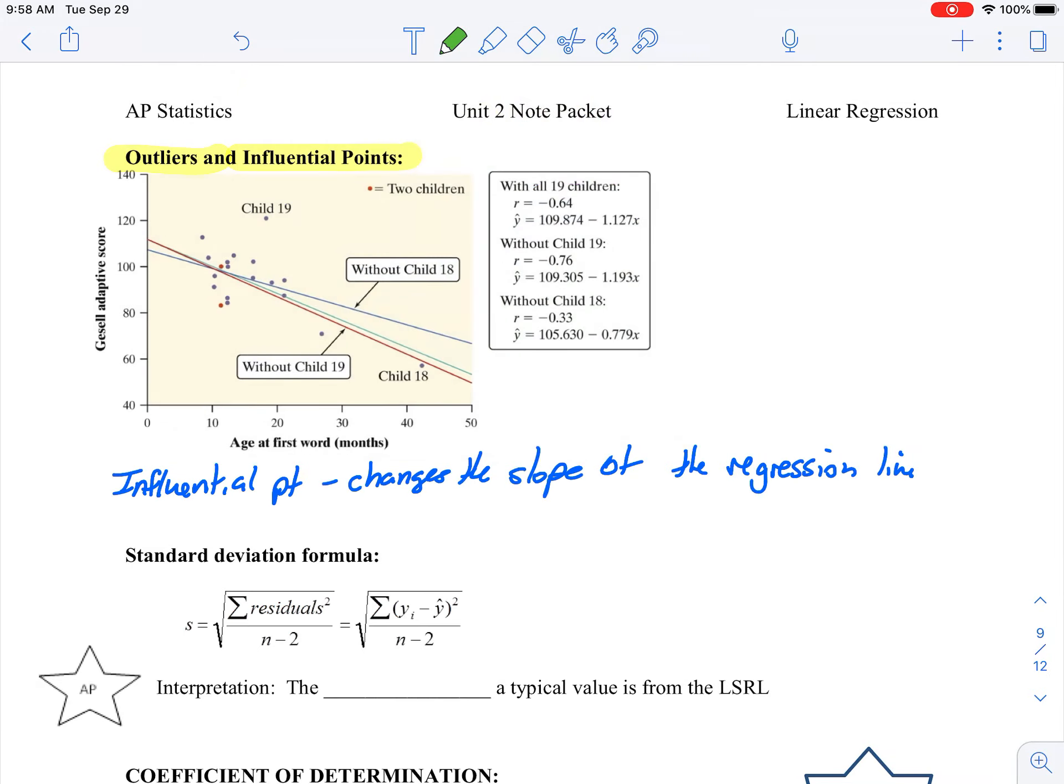So if we look at what we have here, we have this drawing. Our green line is what we have with all 18 points. And so what they're doing here is we're identifying child number 18 and child number 19 as outliers. So 18 and 19 are both outliers.